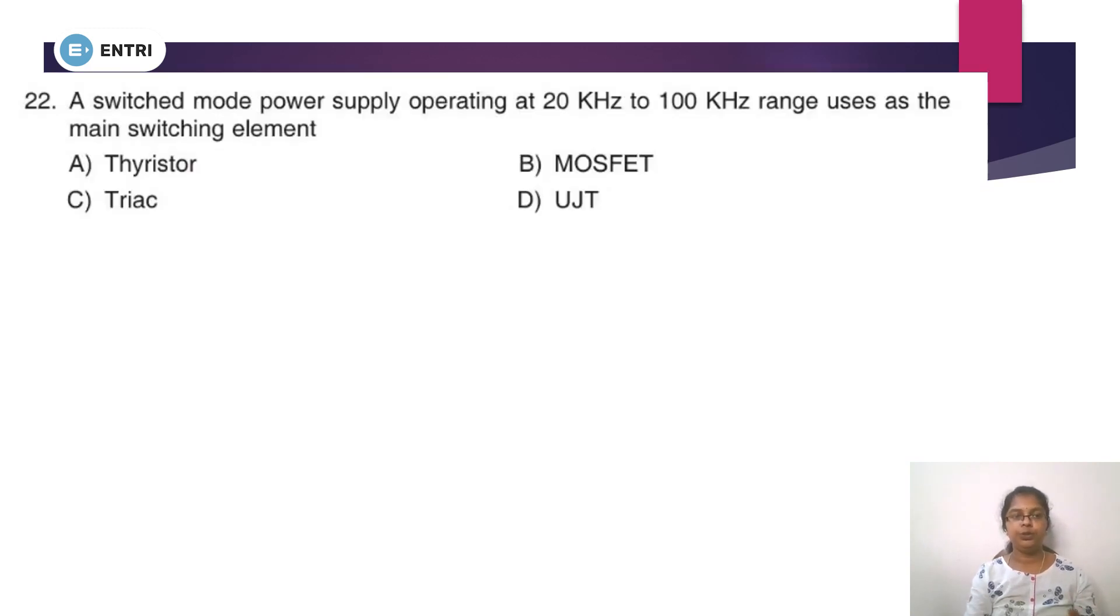The 22nd question: This switched mode power supply operating at 20 kHz to 100 kHz range uses as the main switching element. Now, the switch element - there is a switching element because when the power supply works, it will need an on-stage element. If we break the current and cut down, it will need a switch. Now, it has around 20 kHz and 100 kHz range for power supply. Which switching element is most apt?